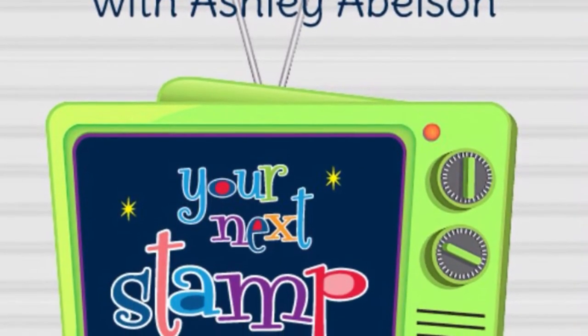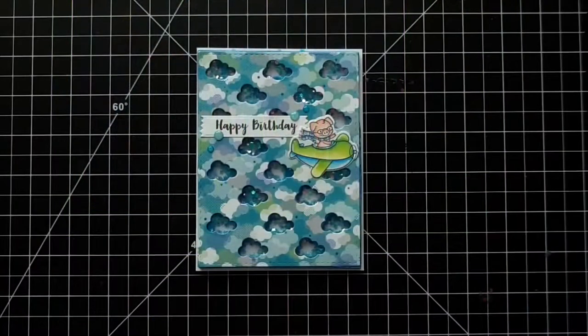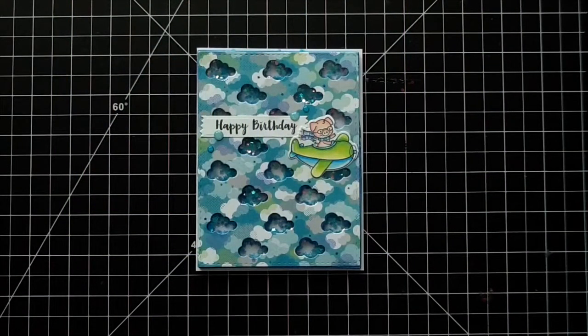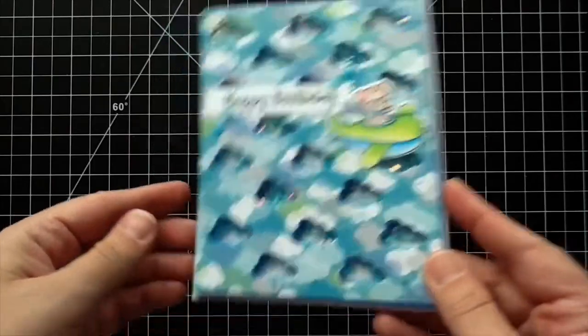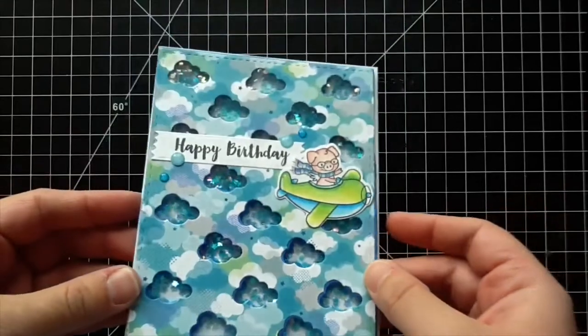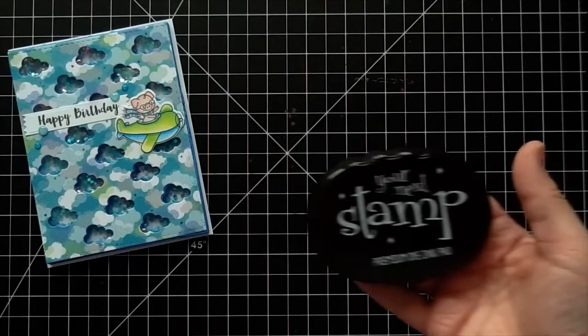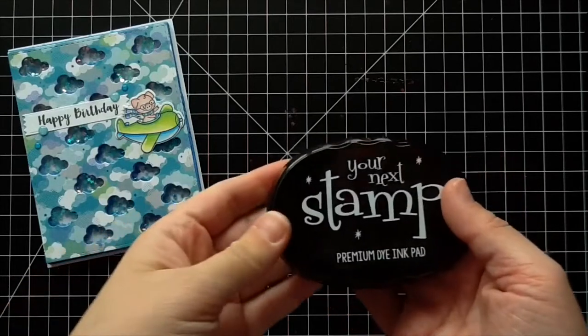Hi there, it's Ashley here with this week's stamp crate repeat for Your Next Stamp. Today I'm going to be sharing with you a little shaker card that I made. This new cloud die that came out is so cute, I was so excited to turn it into a shaker card. Today I'm going to make this birthday card and I'll link all the products in the description box so you can find them in the Your Next Stamp store.